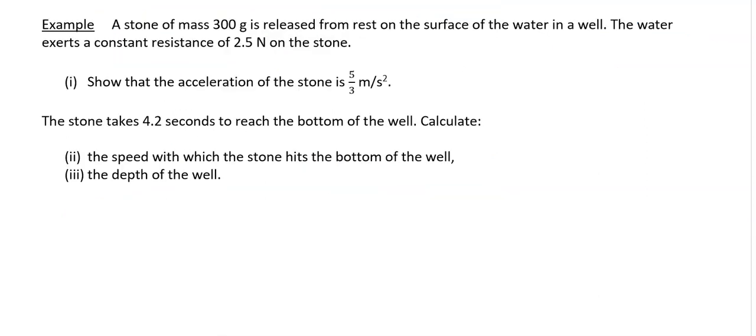Our last example for this video has 3 parts to it. Part 1, first of all it says a stone of mass 300 grams, not kilograms 300 grams, is released from rest on the surface of the water in a well. The water exerts a constant resistance of 2.5 Newtons on the stone. To show that the acceleration of the stone is 5 over 3 meters per second squared. First thing we want to do is a diagram. I am just going to do my stone, it is a round circle, and I am just going to say 0.3 kilograms. That is the mass of it.